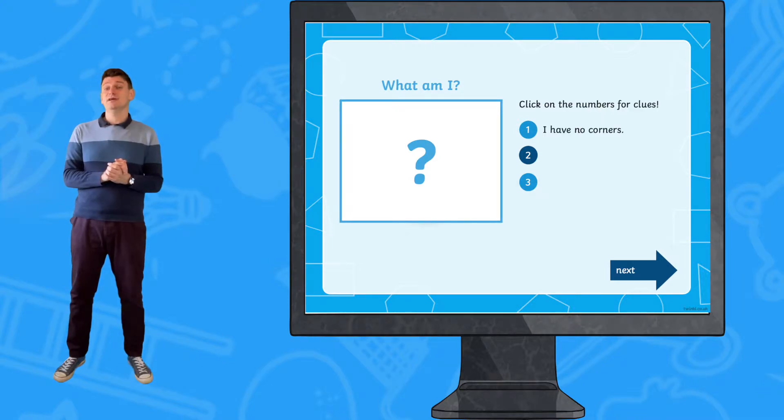Each slide has three clues and acts as a discussion point for what the shape could be. It introduces or develops understanding of key vocabulary such as sides and corners.